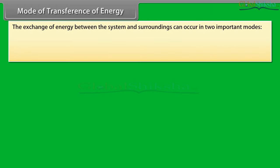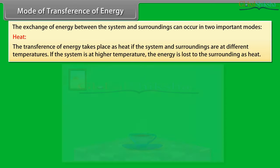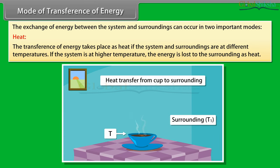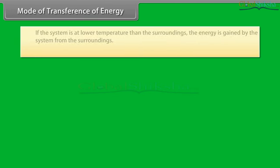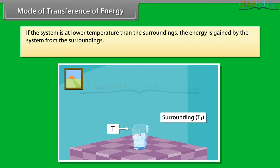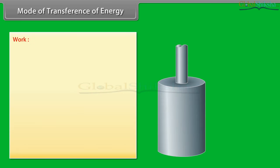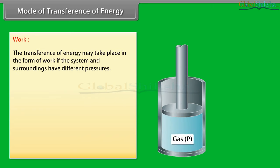Mode of transference of energy: the exchange of energy between the system and surroundings can occur in two important modes. Heat: the transference of energy takes place as heat if the system and surroundings are at different temperatures. If the system is at higher temperature, energy is lost to the surroundings as heat. If the system is at lower temperature than the surroundings, energy is gained by the system. Heat is represented by Q.